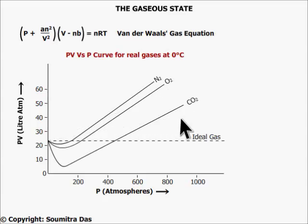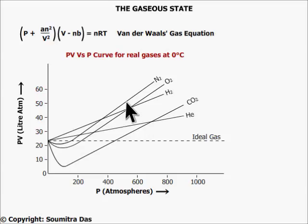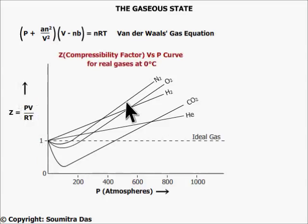The deviation is mainly of two types. Hydrogen and helium show positive deviation throughout. The other gases show a negative deviation initially, reach a minimum, then increase as we further raise the pressure. Above 400 atmospheres pressure, all gases seem to have positive deviation from ideal behavior. For simplicity, the ordinate can be replaced by Z = PV/RT, which is the compressibility factor and should equal one for ideal gases.